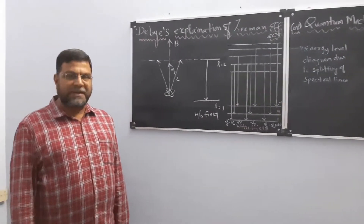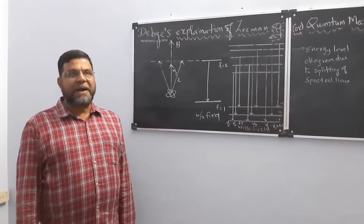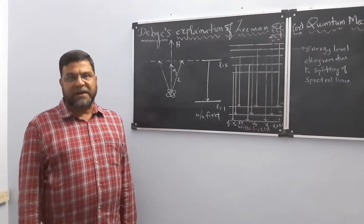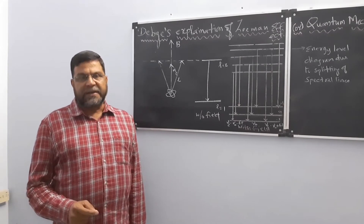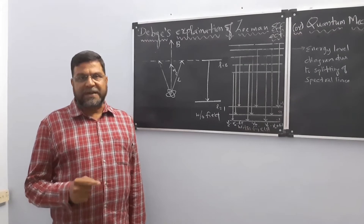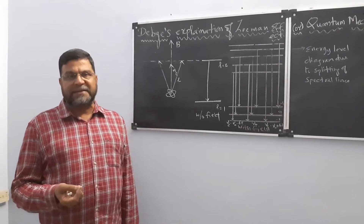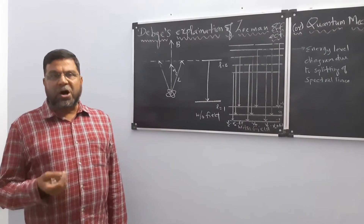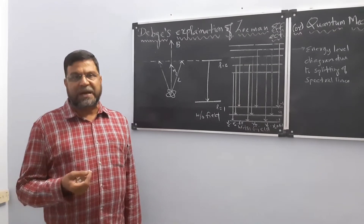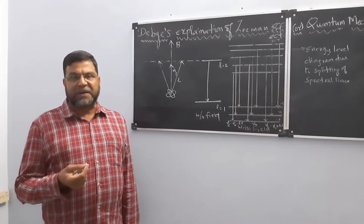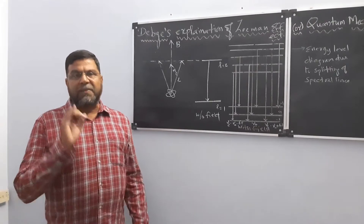In the last class I told you what is meant by the Zeeman effect, what is normal Zeeman effect, and what is anomalous Zeeman effect. If a magnetic field is applied on a spectral line and it splits into two, that is known as the Zeeman effect. If a strong magnetic field is applied and the line splits into three, that is normal Zeeman effect. If a weak magnetic field is applied and it splits into more than three lines, that is anomalous Zeeman effect.